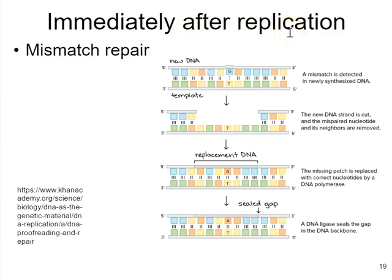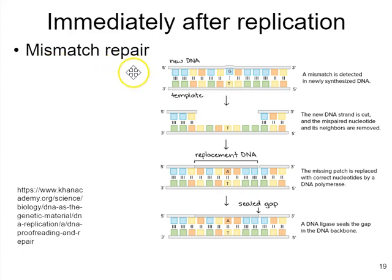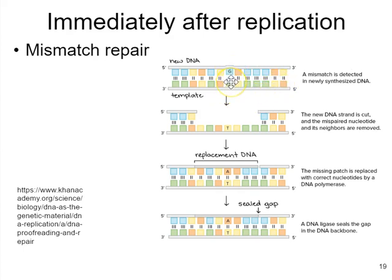Immediately after replication, just after replication has finished and before the DNA has had a chance to be further processed — for example, by methylation enzymes — we have a system called mismatch repair. If the proofreading function did not catch an error and synthesis is all over but just barely finished, we still have a distortion in the double helix at the position of the error. This distortion is what the mismatch repair proteins recognize.